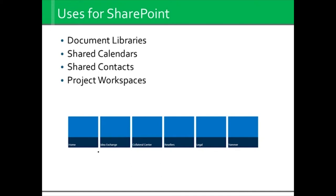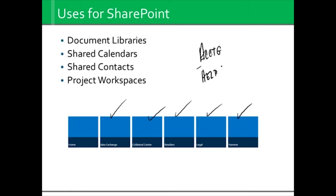If you work with a company of 3,000 people, now there's a lot of information that people need to find. You might have a reseller portal, a legal portal, a Yammer license for social networking, idea exchanges, collateral centers. You might find that accounting has its own SharePoint site, maybe the help desk has its own SharePoint site — because you can broadcast any amount of information and customize it based on who's going to come take a look.